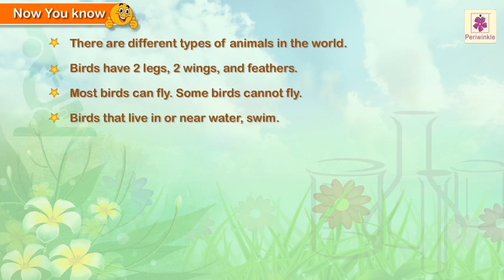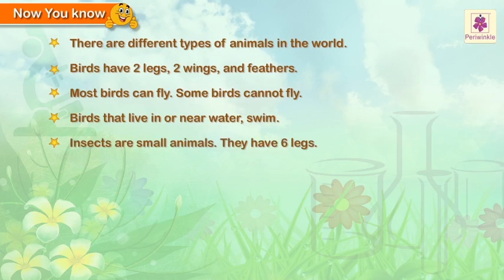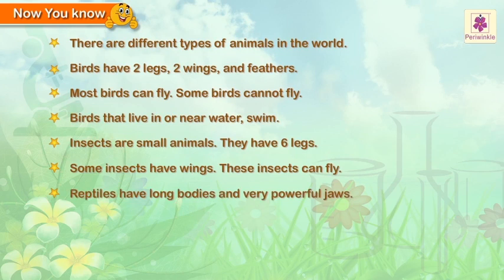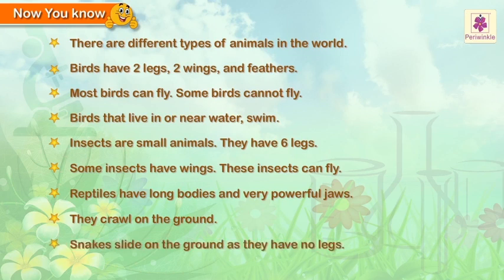Birds that live in or near water swim. Insects are small animals and they have six legs. Some insects have wings, and these insects can fly. Reptiles have long bodies and very powerful jaws. They crawl on the ground. Snakes slide on the ground as they have no legs.